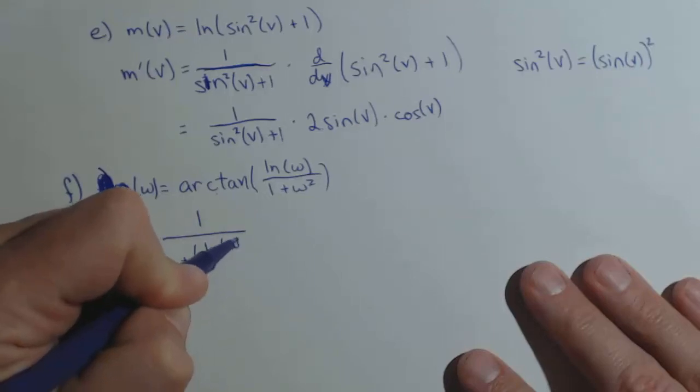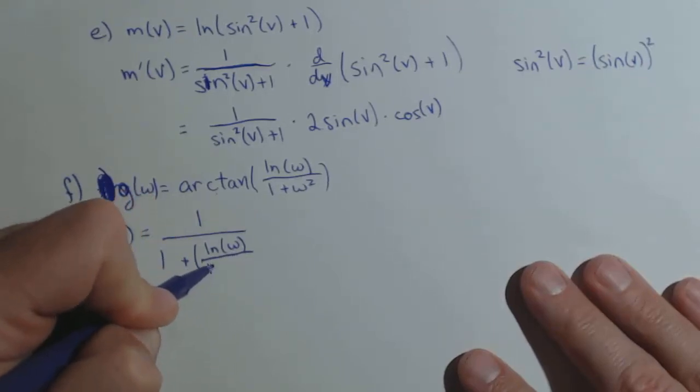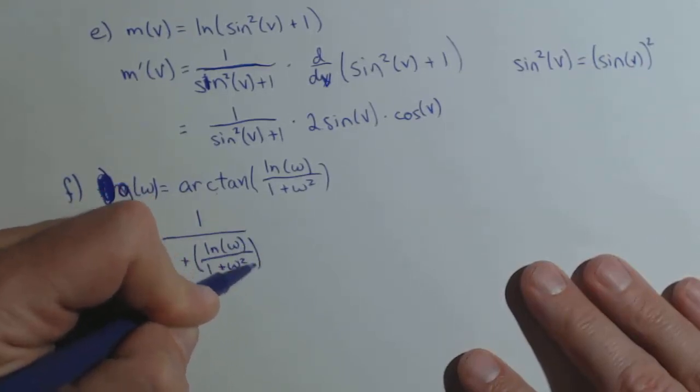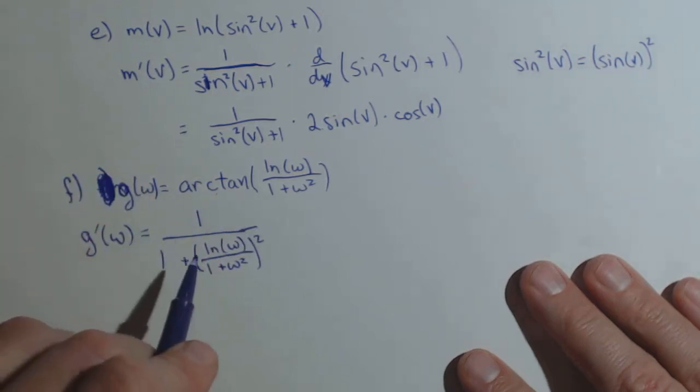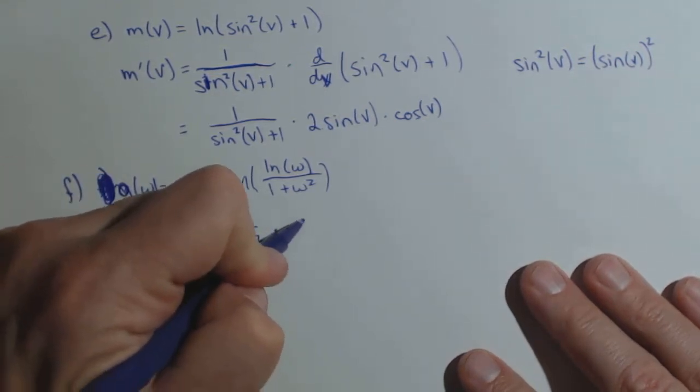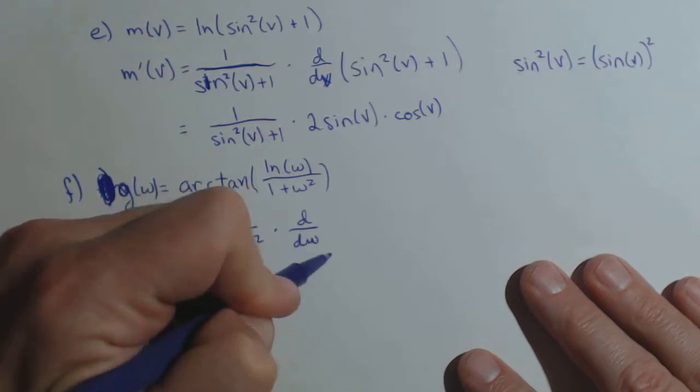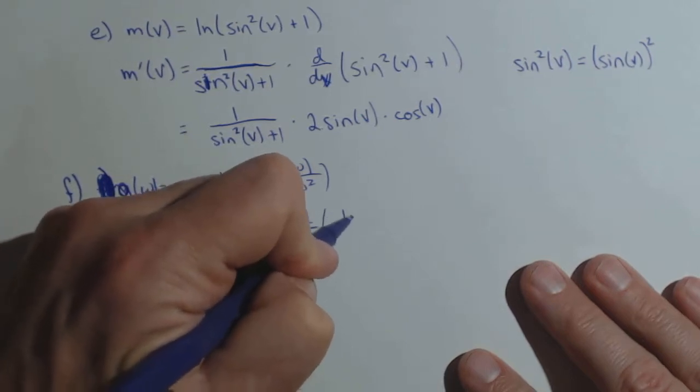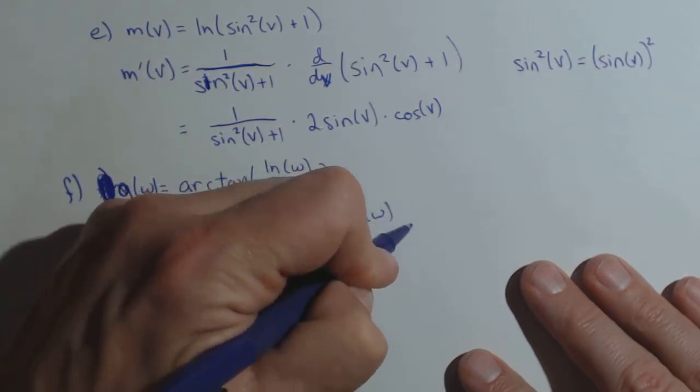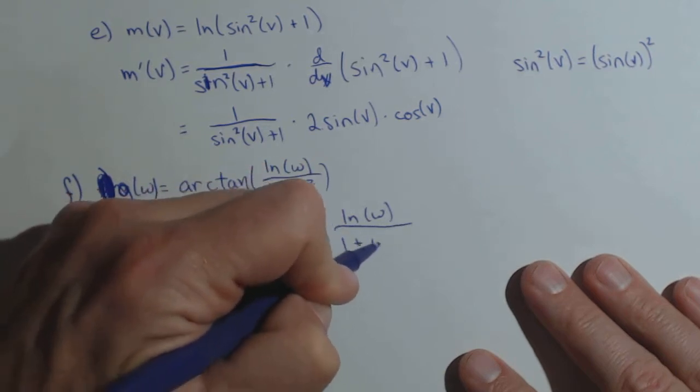So this is where it looks a little bit messy. Natural log of w over one plus w squared squared. That's the derivative of arctan. Now times the derivative with respect to w of the inside, which is natural log of w over one plus w squared.